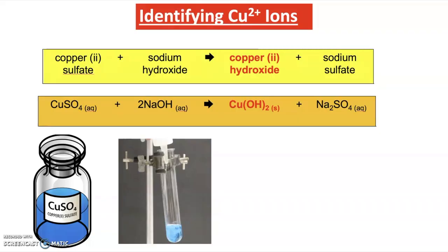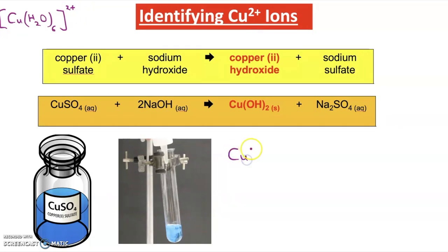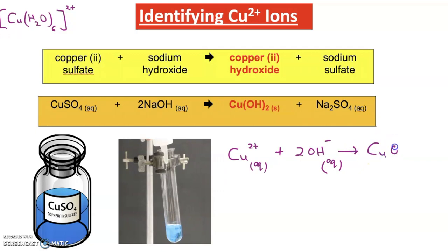We can describe this reaction with an ionic equation. The complex ion here would be Cu(H₂O)₆²⁺. We can write the simplified ionic equation as Cu²⁺ (aq) + 2OH⁻ (aq) → Cu(OH)₂ (s). We can also write the full ionic equation as Cu(H₂O)₆²⁺ (aq) + 2OH⁻ (aq) → Cu(OH)₂(H₂O)₄ (s) + 2H₂O (l). The product has four waters because the coordination number must still be six during this reaction.